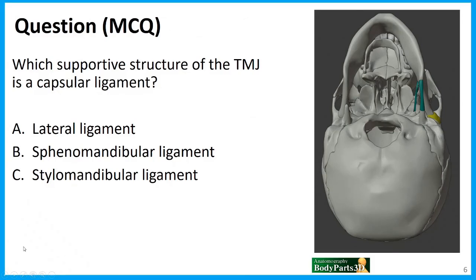Now for the question: which supportive structure of the TMJ is a capsular ligament? Is it the lateral ligament, the sphenomandibular ligament, or the stylomandibular ligament? The correct answer is the lateral ligament. It is represented here in yellow, and it is capsular in that it is part of the capsule itself, reinforcing it on the lateral side. Both the sphenomandibular and stylomandibular ligaments are further away from the capsule.